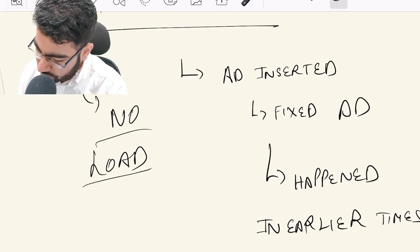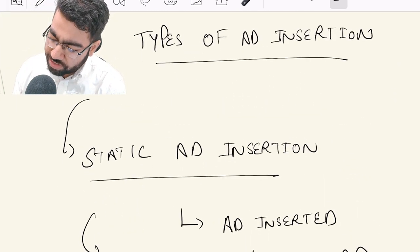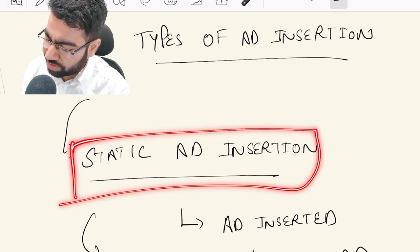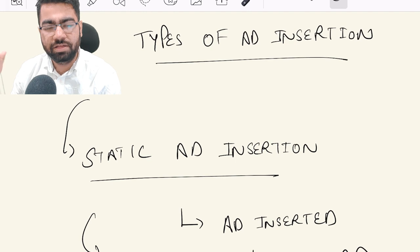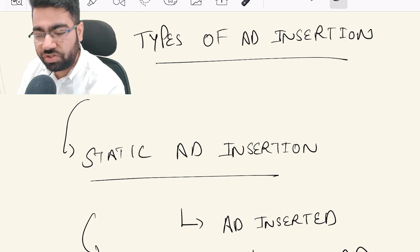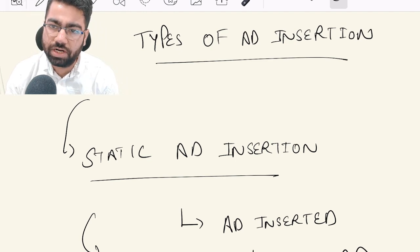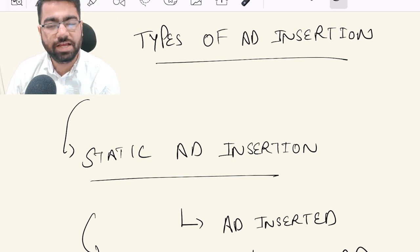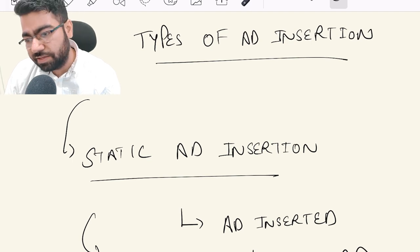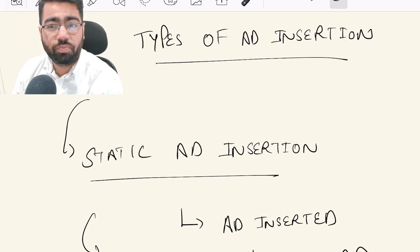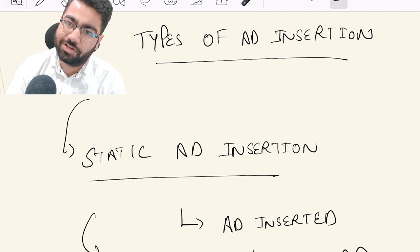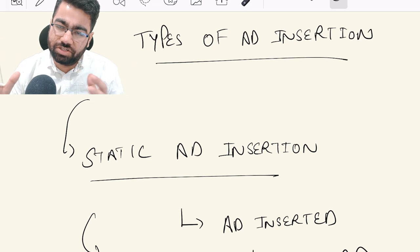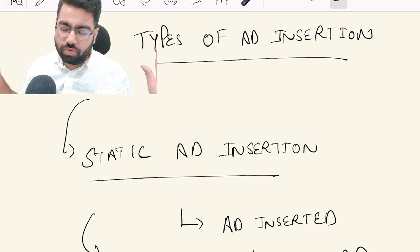Now we will discuss the types of ad insertion. One type is static ad insertion, where we show the same ads to everyone. This is what used to happen when we watched TV — a set of ads was decided already, and whenever the stream reached the playout markers, the ads were inserted and shown to users. This is not very complex; you just generate an ad stream, merge it with the live stream, and give it to the user.